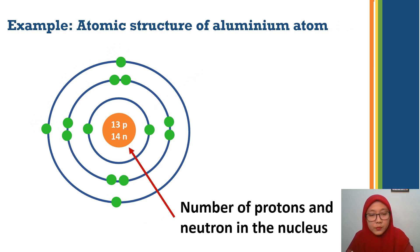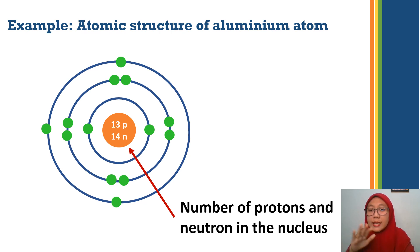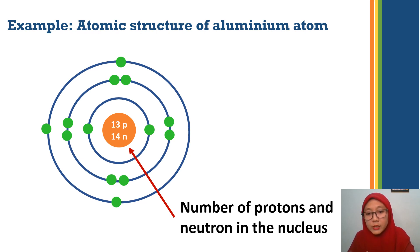In another example, instead of writing only the name of the element, we can also write the number of protons and neutrons at the nucleus, since we know that the proton and neutron are at the middle — at the nucleus. So we write the proton number and neutron number at the nucleus.